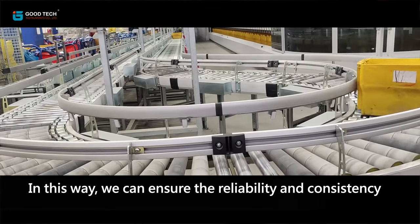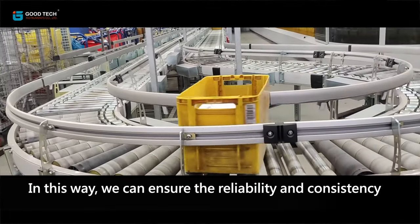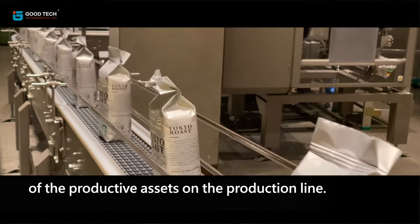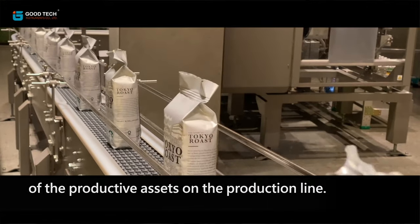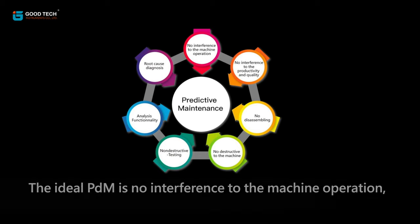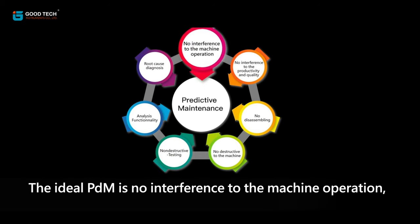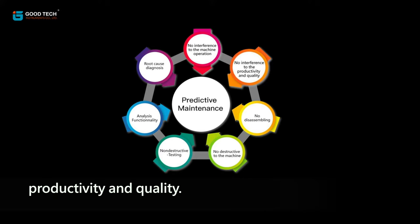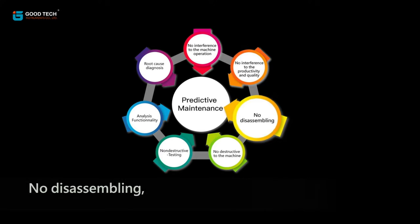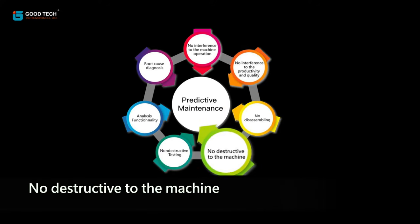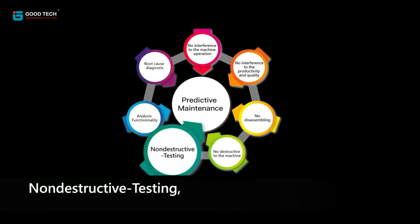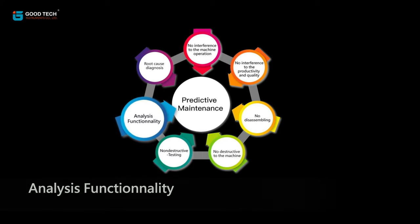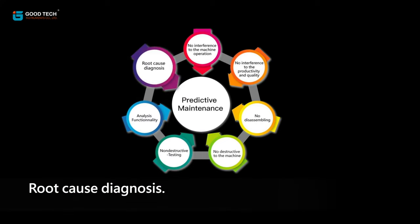In this way, we can ensure the reliability and consistency of productive assets on the production line. The ideal predictive maintenance has no interference with machine operation, productivity, and quality — no disassembling, no destructive testing — while providing analysis functionality and root cause diagnosis.